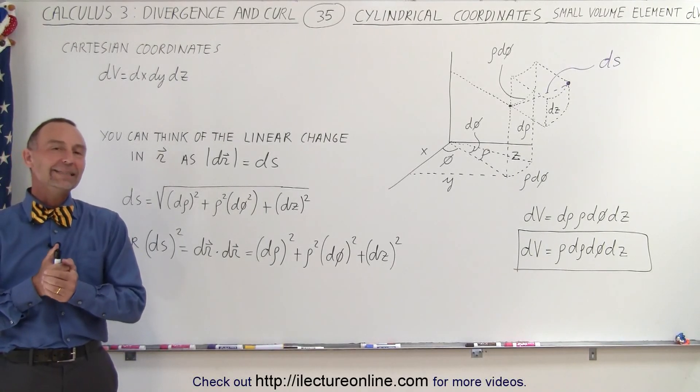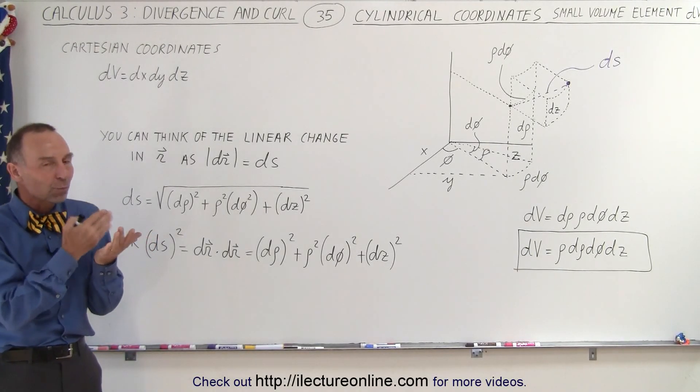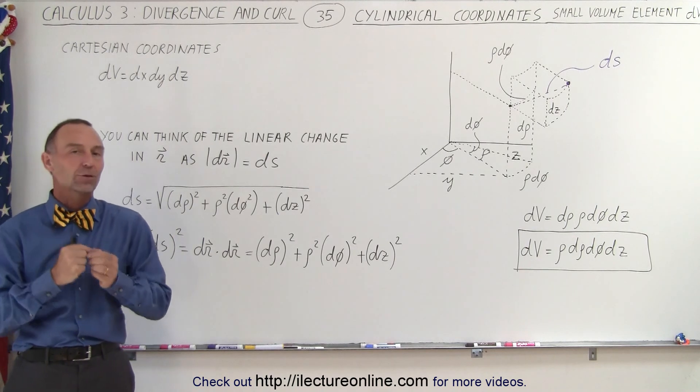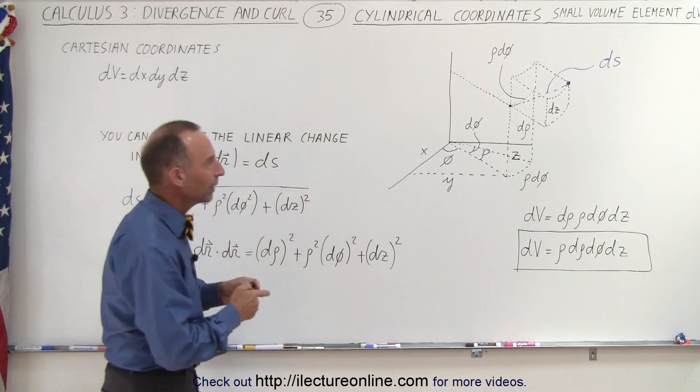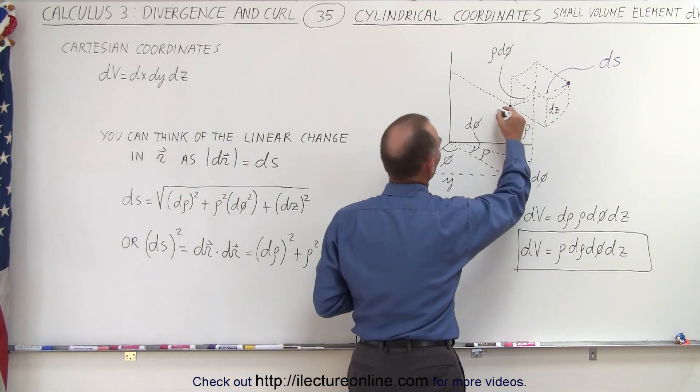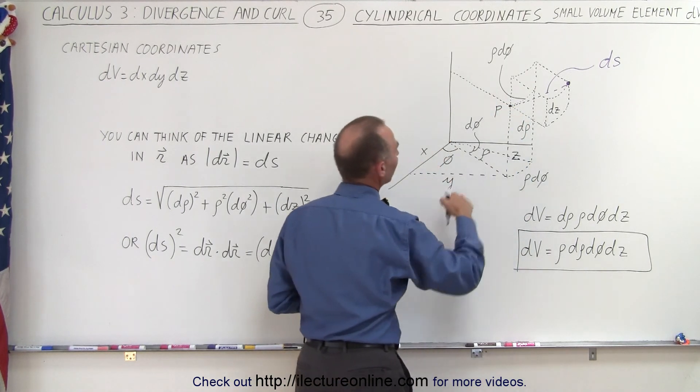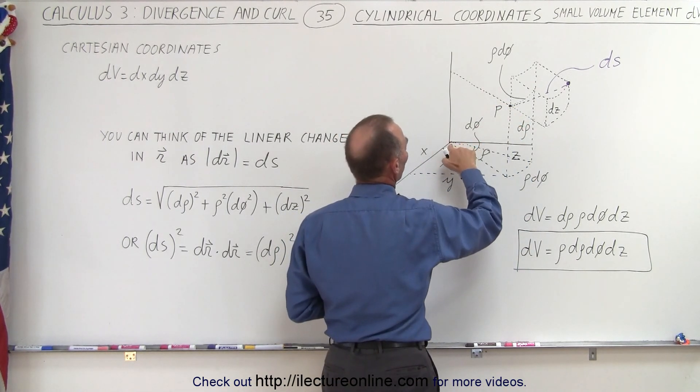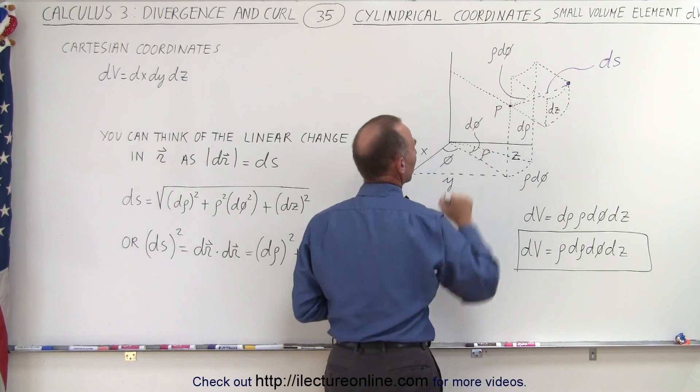Welcome to ElectronLine. Now let's define the small volume element in cylindrical coordinates. First of all, we'll pick some arbitrary point called point P right there, and we'll have a position vector from the origin to that point P right there.